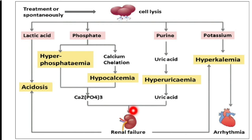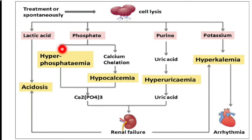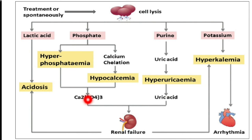The malignant tumor cells are high in phosphorus, so when they release phosphate into the blood it causes hyperphosphatemia. This hyperphosphatemia ultimately leads to secondary hypocalcemia — phosphorus combines with calcium in the blood, forming calcium phosphate. Calcium phosphate accumulates in the kidney causing kidney injury, and when it accumulates in the heart it causes arrhythmias.